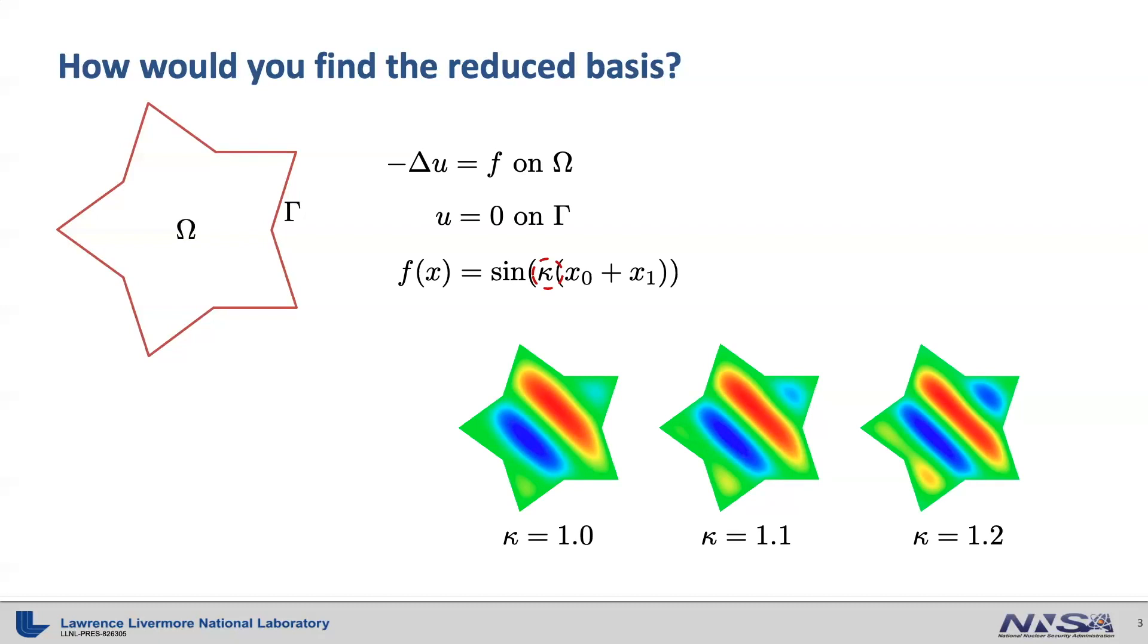To demonstrate that, let's say the solutions of the Poisson problem with kappa equals 1.0, 1.1, and 1.2 are U1, U2, and U3 respectively. Then we collect them in a column-wise matrix. Then we orthogonalize it to form the reduced basis matrix phi. To orthogonalize it, you can use QR factorization or singular value decomposition SVD.